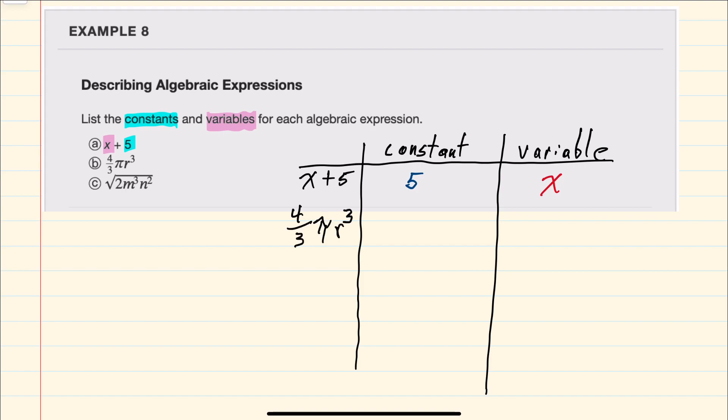For our next example here, 4 thirds is a constant. Numbers, fractions like 4 thirds, always have the same value. Pi is also a constant. Pi's value does not change, so we must list that as a constant. The variable here is just the r value, which can change.